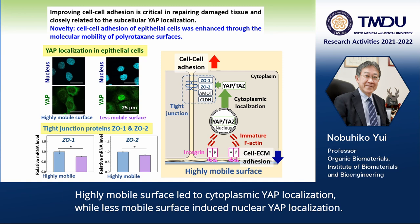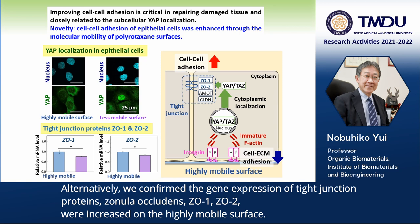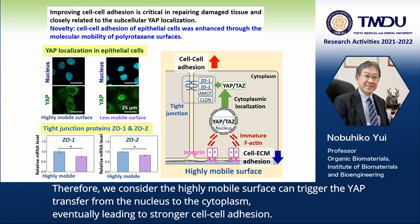while less mobile surface induced nuclear YAP localization. Alternatively, we confirmed the gene expression of tight junction proteins — the neural occludens ZO1 and ZO2 — were increased on the highly mobile surface. Therefore, we consider the highly mobile surface can trigger the YAP transfer from the nucleus to the cytoplasm,